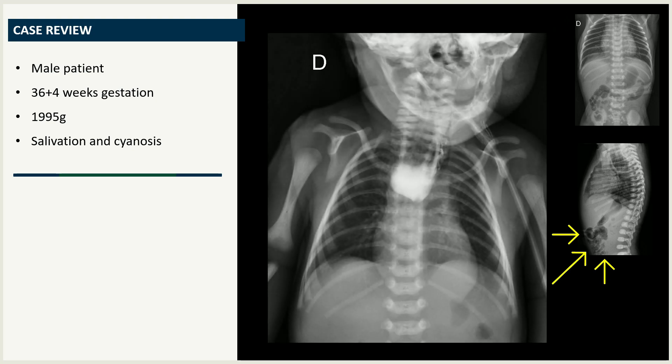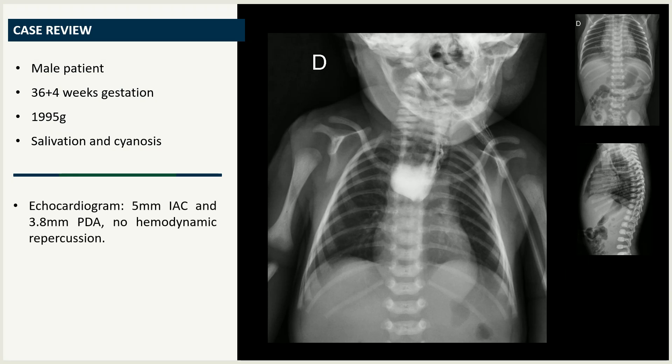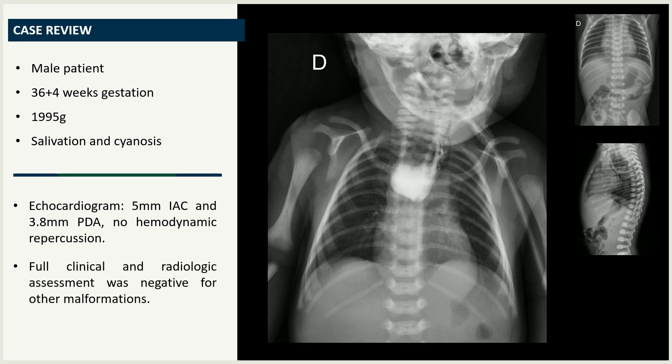As air was seen in the abdomen, a distal tracheoesophageal fistula was also diagnosed. The preoperative echocardiogram revealed the left position aorta, and the full clinical and radiological assessment showed no other malformations.